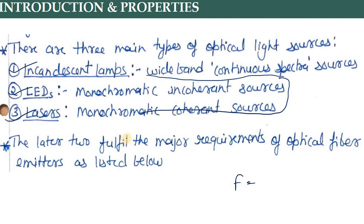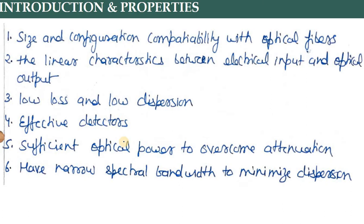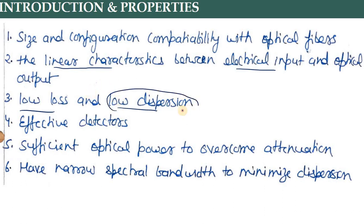The main important sources used today in optical communications are different kinds of LEDs and lasers. In these points you can compare lasers and LEDs. Starting with size and configuration — we can develop small-sized LEDs or lasers compatible with optical fiber. The electrical-to-optical characteristics are quite linear in both cases. In terms of low loss and low dispersion, lasers have less dispersion than LEDs. Effective detectors can also be built as we move towards coherent sources of the same frequency.